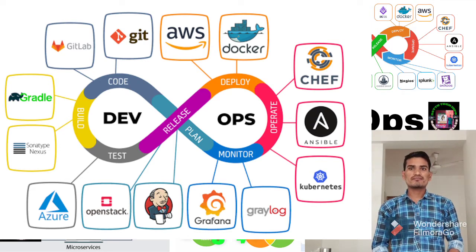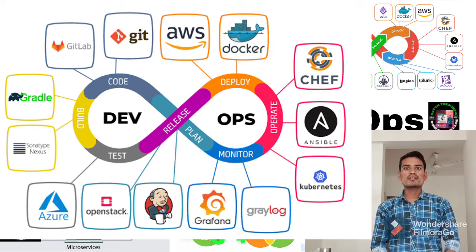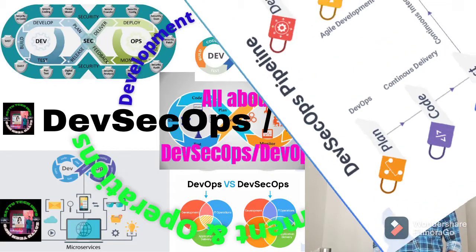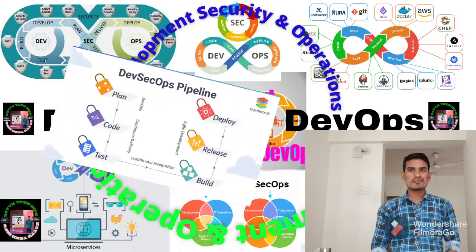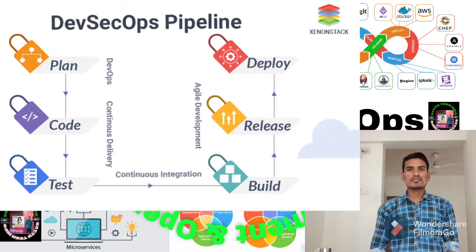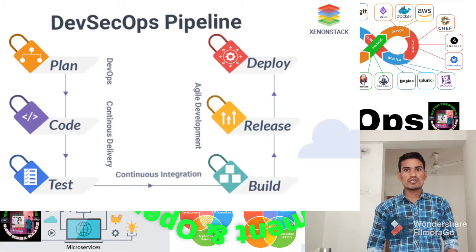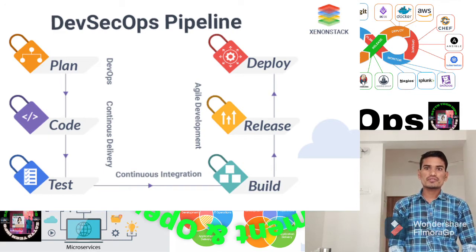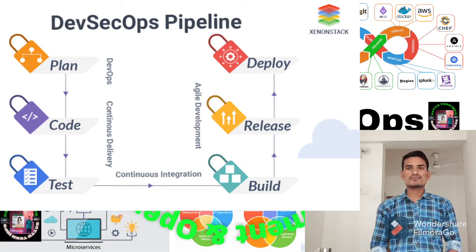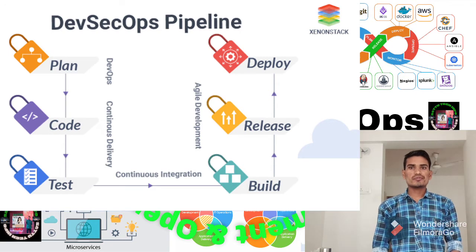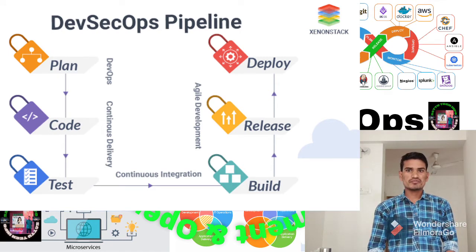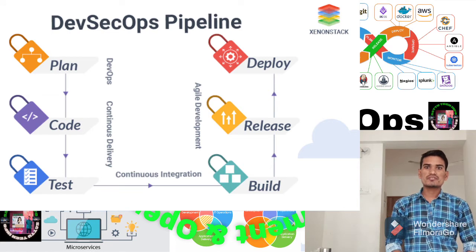There are different steps in a typical DevOps pipeline. A typical SDLC process includes phases like plan, code, build, test, release and deploy. In DevSecOps, specific security checks are programmed and applied at each phase.